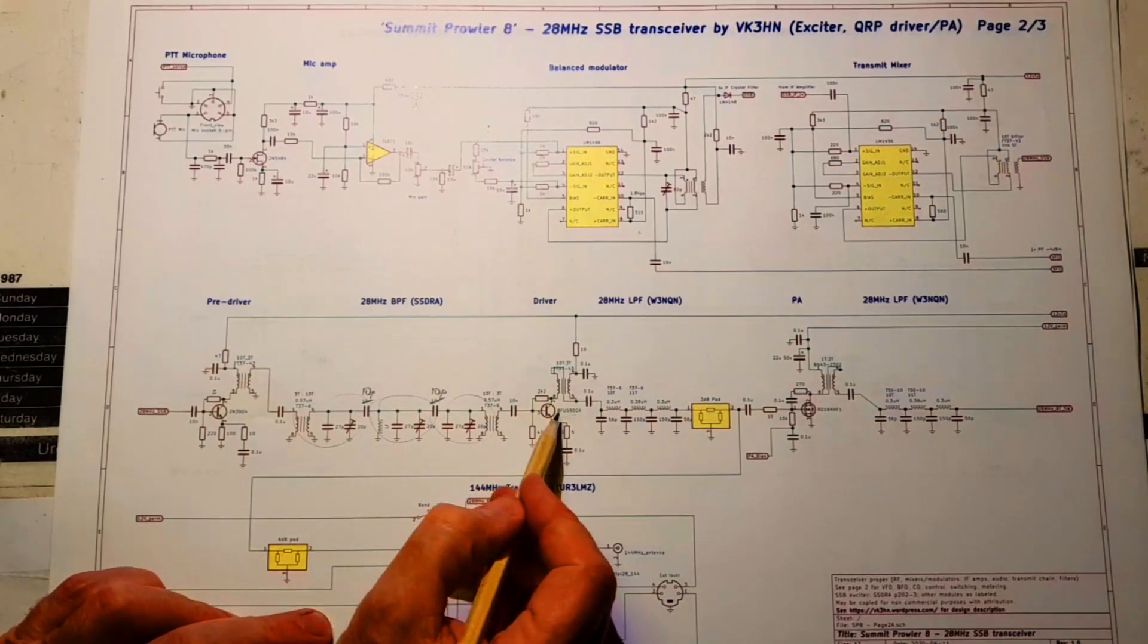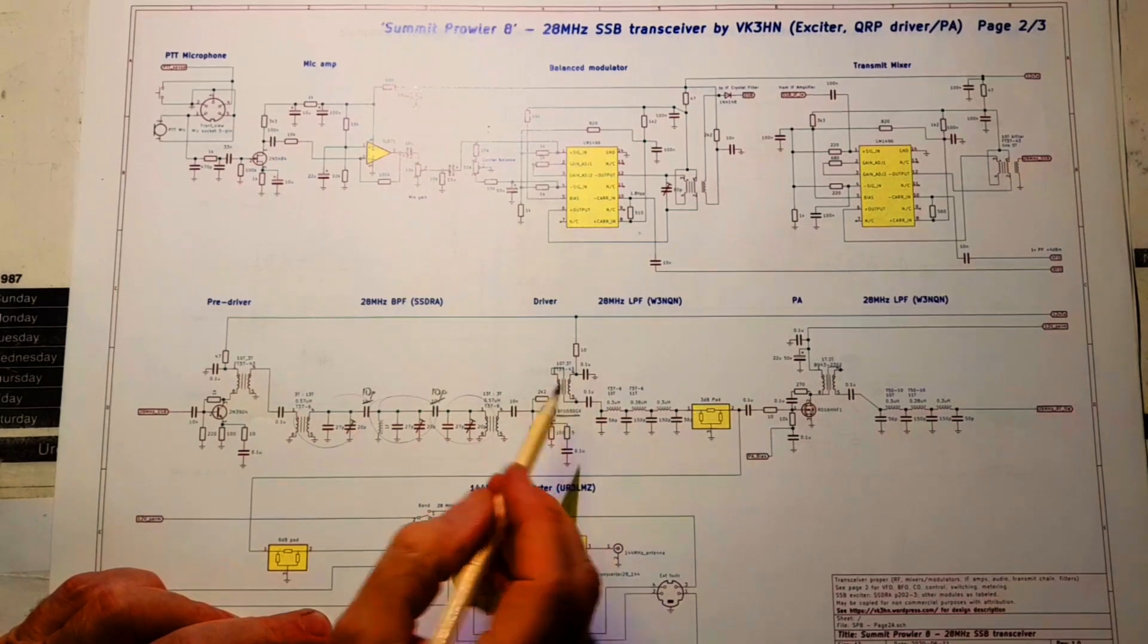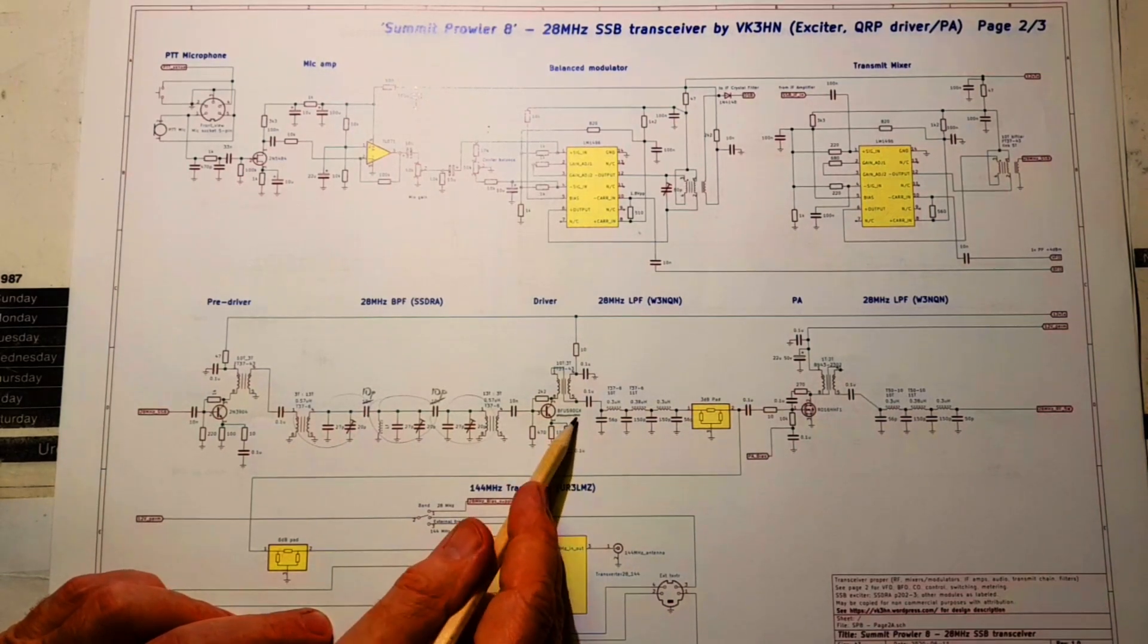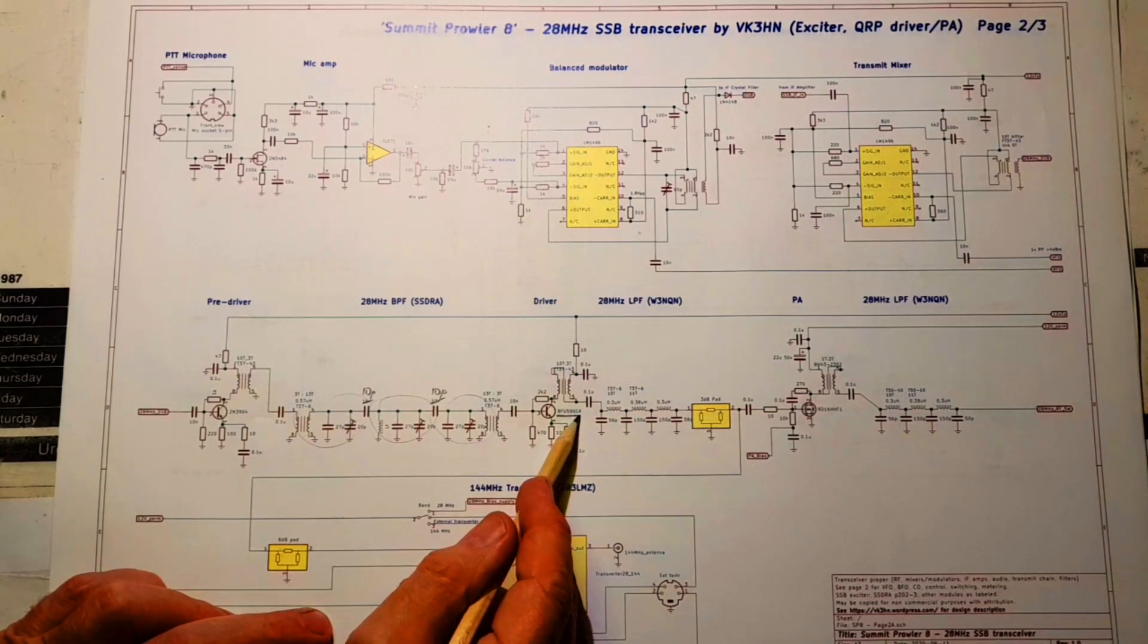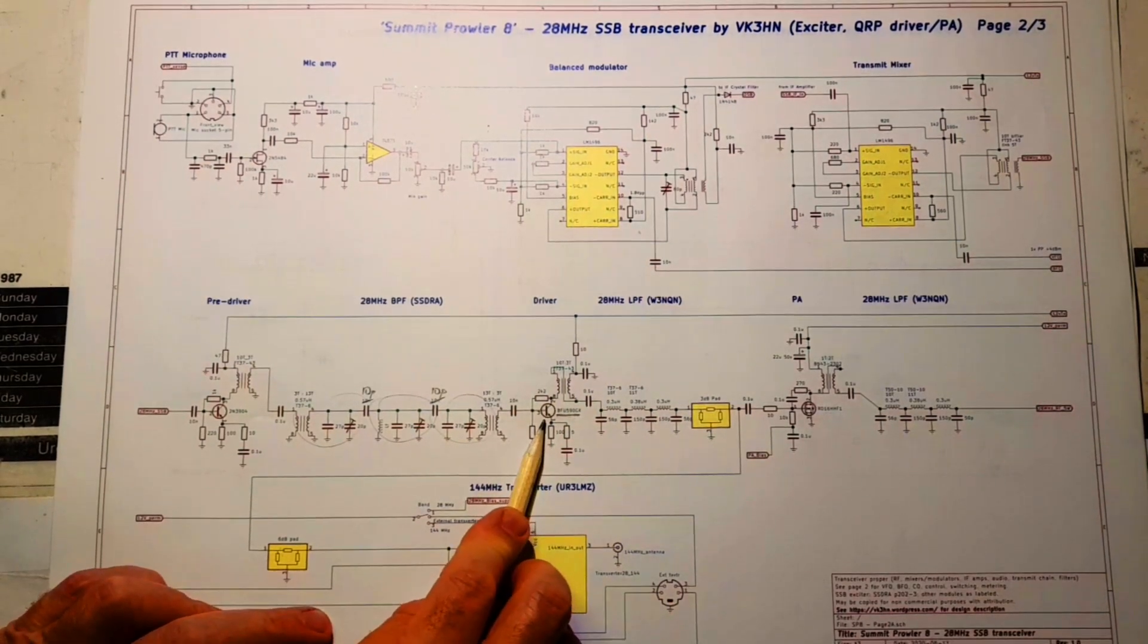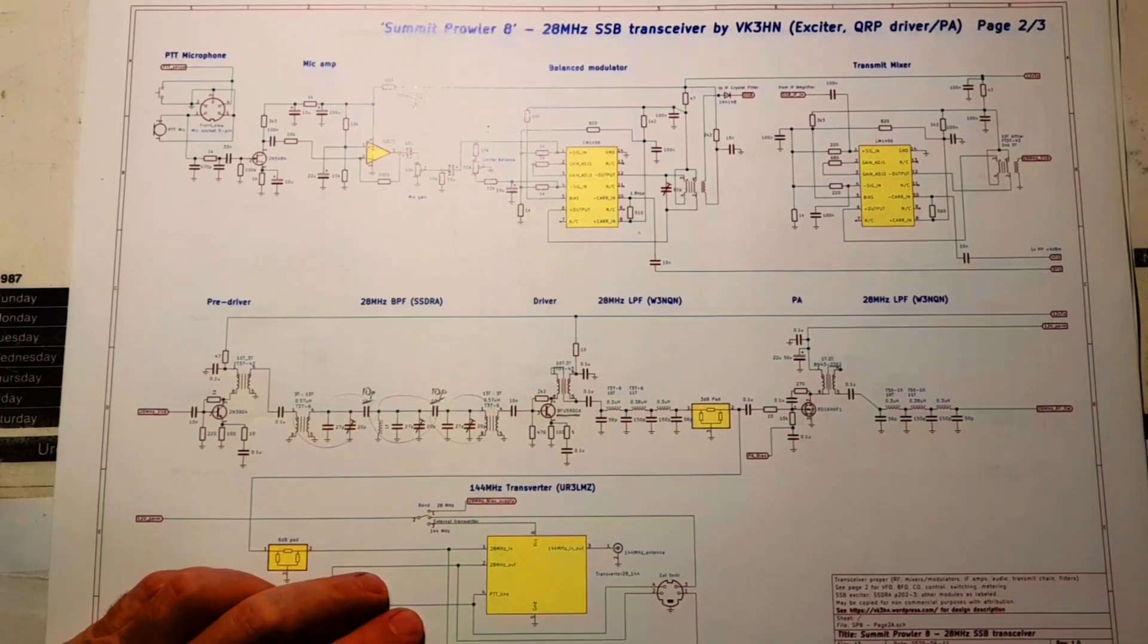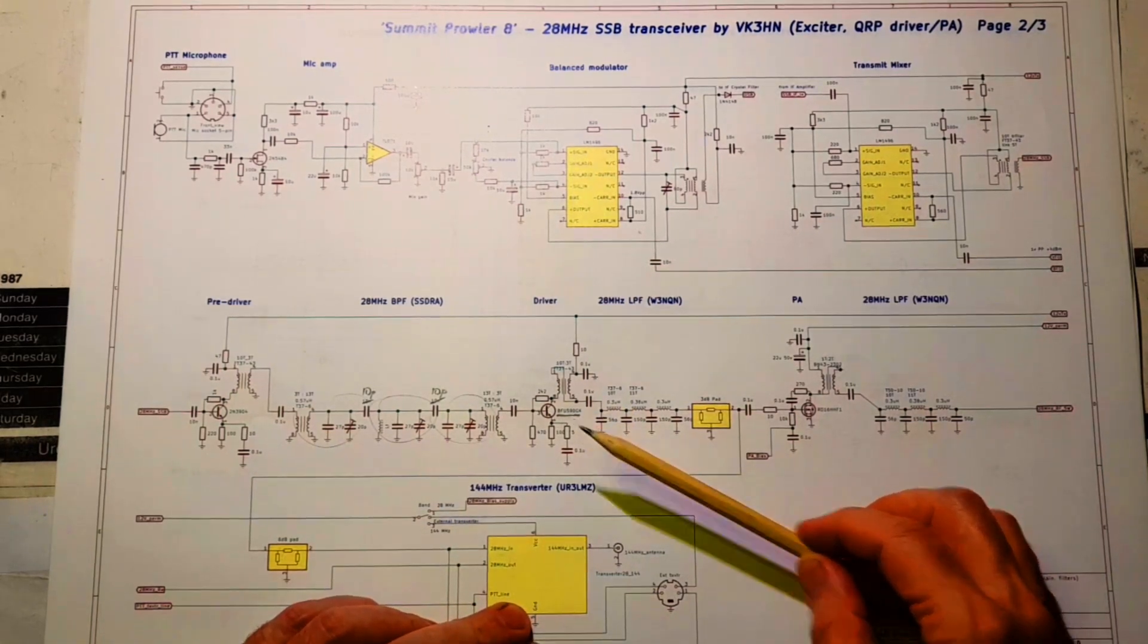The driver transistor in this rig is a BFU590GX. A few years ago I went looking for a replacement for the venerable 2N5179, which is almost impossible to source these days. And I came up with a BFU590GX, which is a pretty good driver transistor. It does go up to a gigahertz or maybe even two. So you just need to perhaps make sure it's not oscillating at 1.2 gigahertz or something undesirable like that, which the 2N5179 would have never done. But this is a worthwhile transistor to use as a driver.